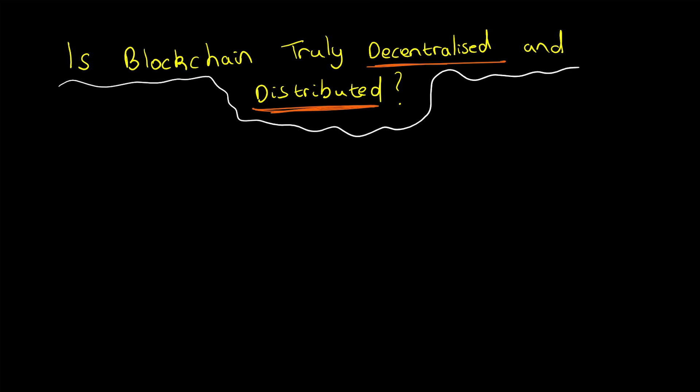Hello and welcome to another lesson on blockchain. In the previous video when I was talking about centralized, decentralized, and distributed systems, I mentioned that blockchain is decentralized and distributed, but there are elements that are centralized, heavily centralized.